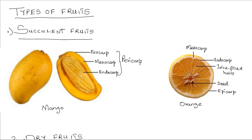Fruits and types of fruits. Remember, a fruit is a ripened ovary. Fruits come in different shapes and forms and they are classified into several types depending on a number of factors.